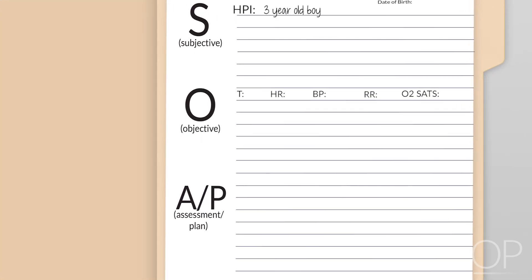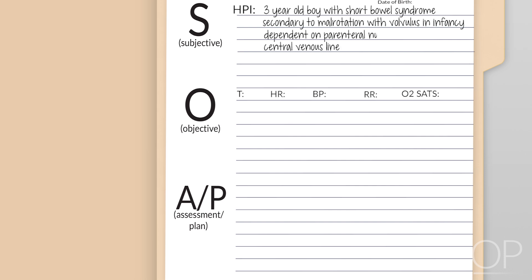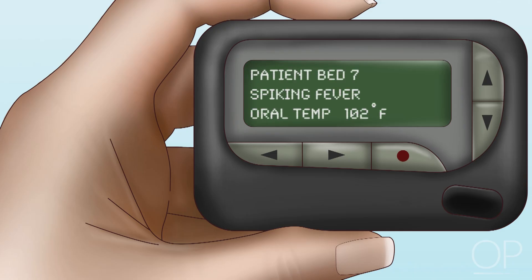You're taking care of a three-year-old boy with short bowel syndrome secondary to malrotation with volvulus in infancy. The patient is dependent on home parenteral nutrition infused via a Broviac line. He is admitted now for observation after a few hours of sleepiness and vomiting. The nurse pages you that his oral temperature is 102 degrees Fahrenheit.